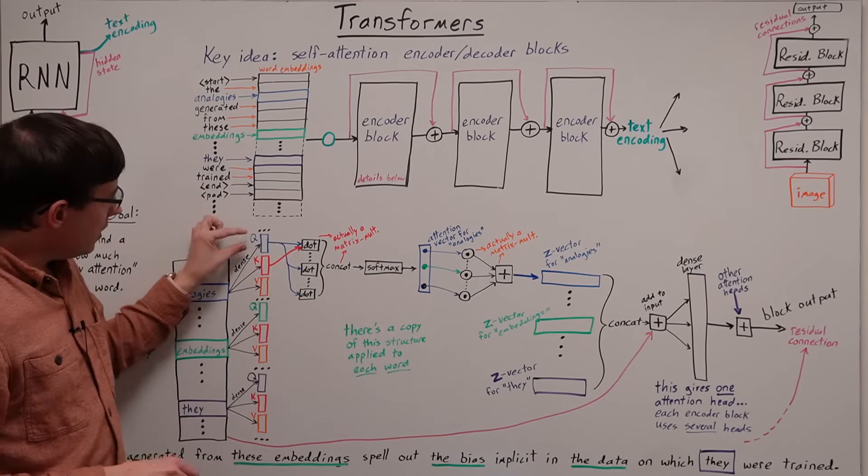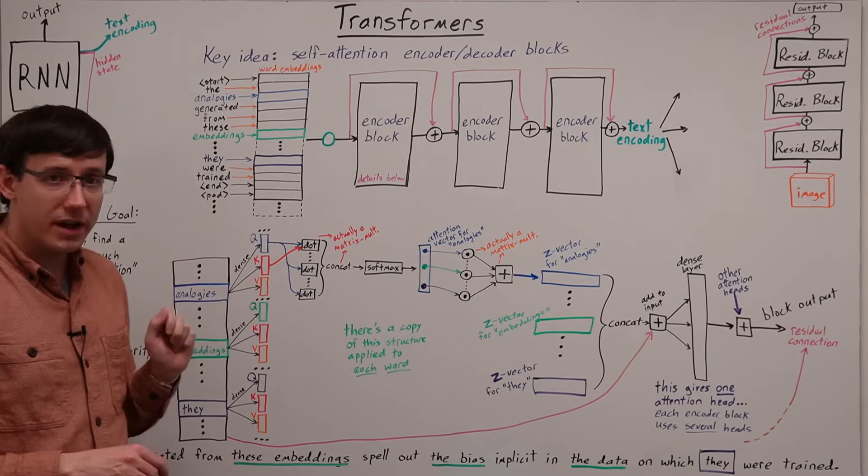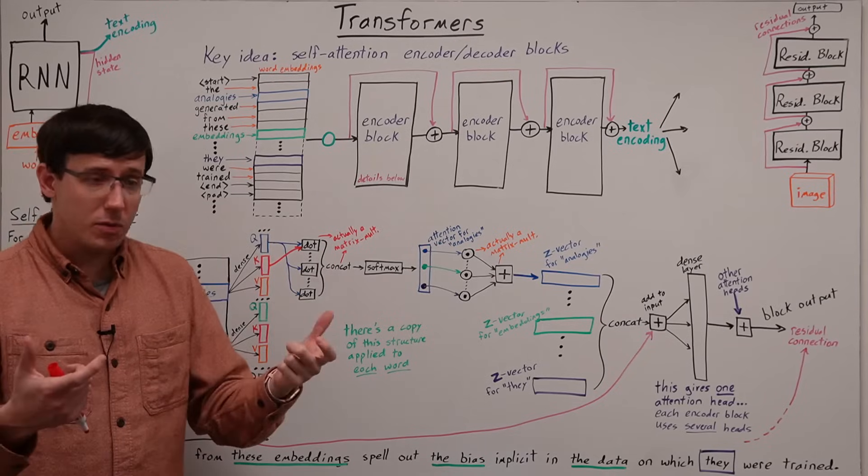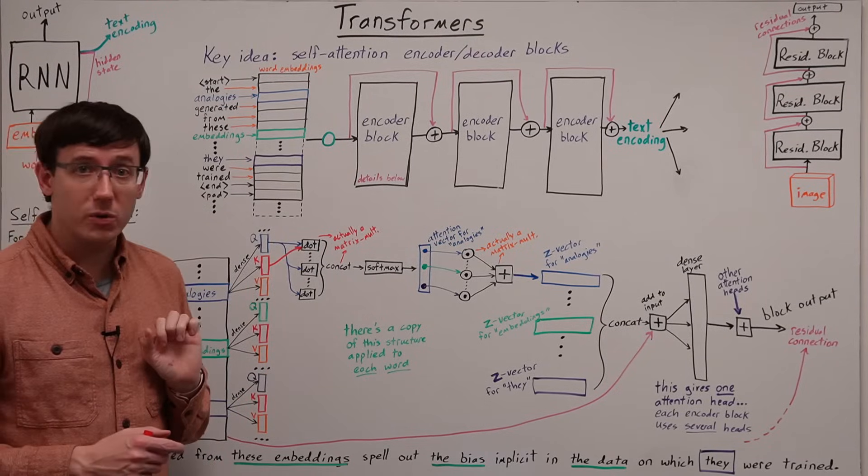So, if the query and key vectors that we got from the dense layers are similar, then we will get a large value when we compute their dot product.